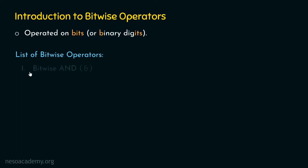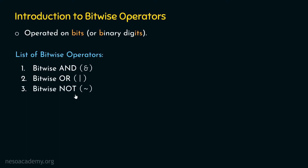The first bitwise operator is the bitwise AND operator, which is represented by the ampersand symbol. The second is the bitwise OR operator, represented by the pipe symbol. The third is the bitwise NOT operator, represented by the tilde symbol. And the fourth is the bitwise EXOR operator, represented by the circumflex symbol. These are all the bitwise operators we have in Python.